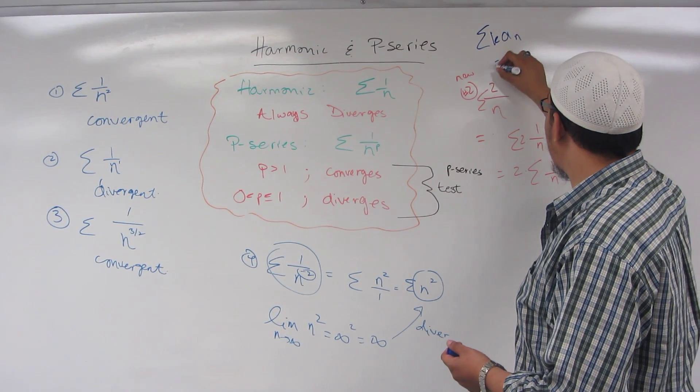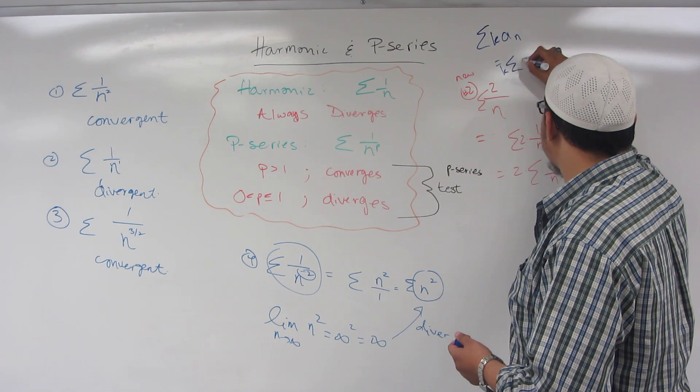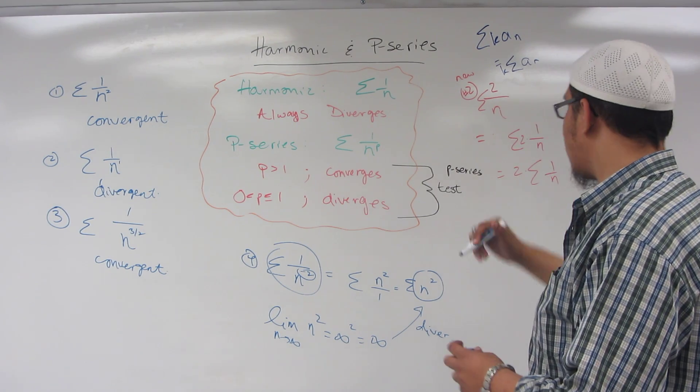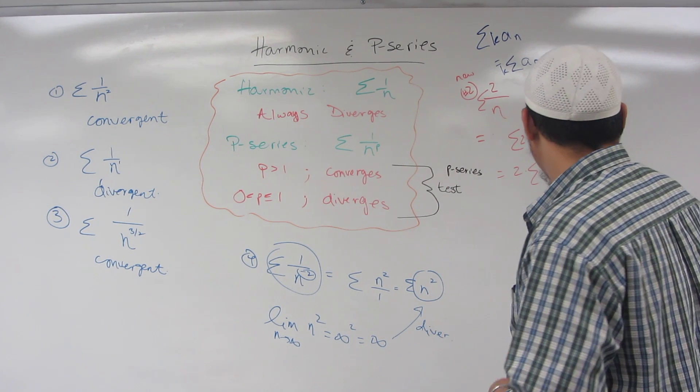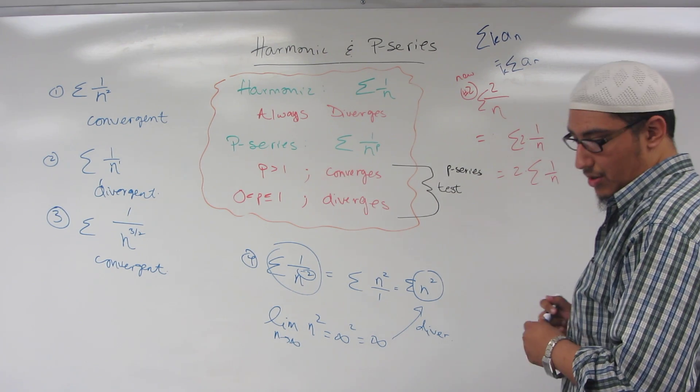this can be simplified down into k, bring the k on the outside, times sigma a sub n. So that's what we did. We brought the two outside, times sigma one over n. Again, this is a harmonic series. This is divergent. I just wanted to show you the case with that.